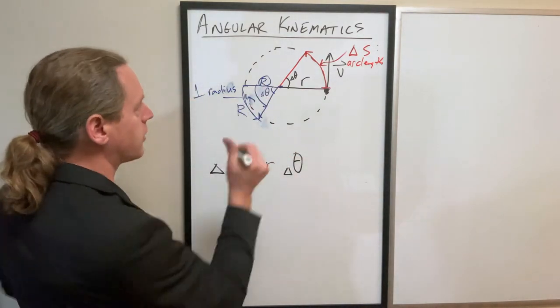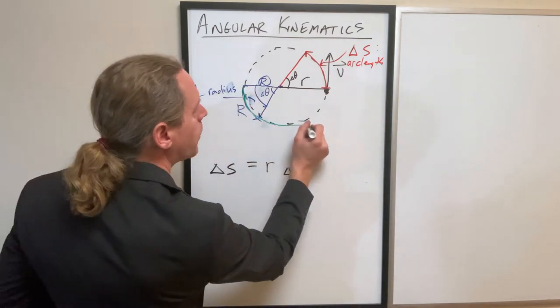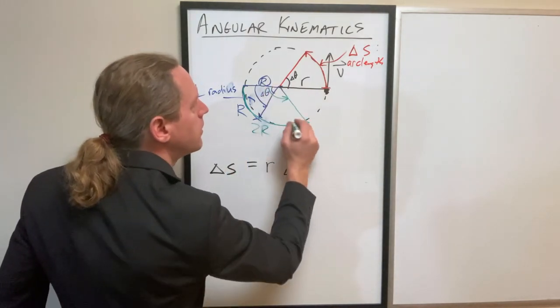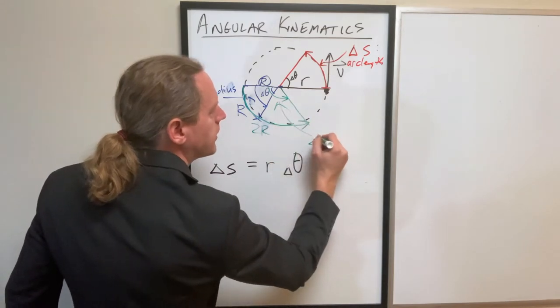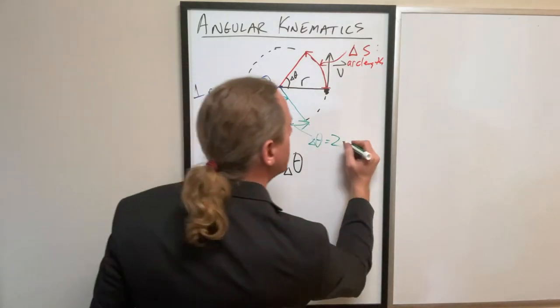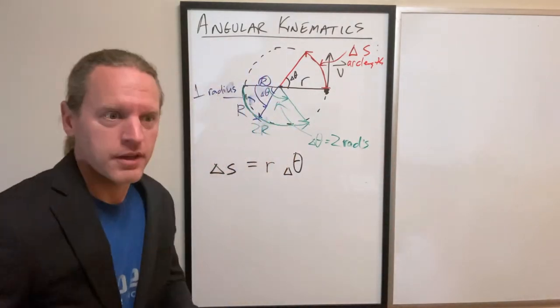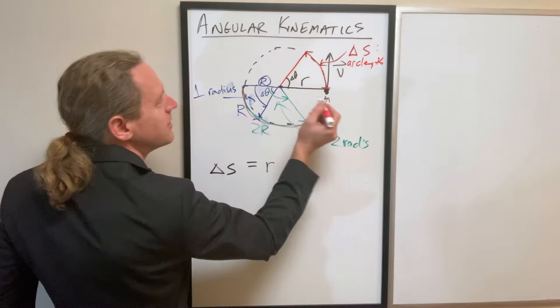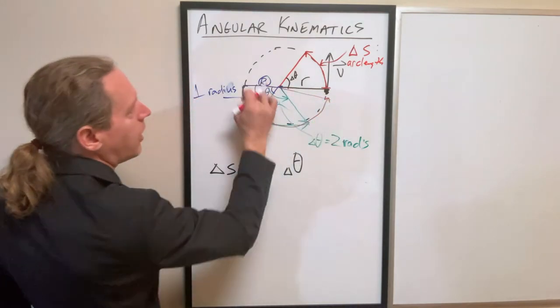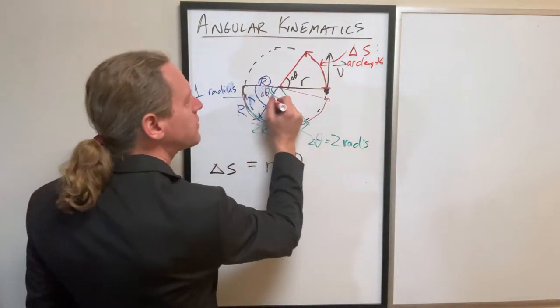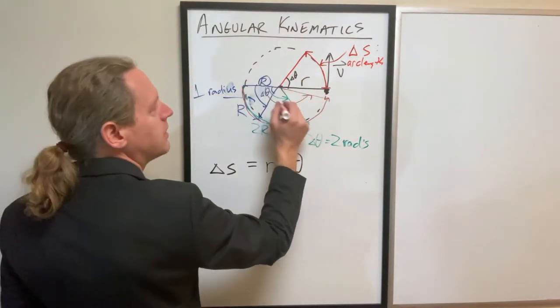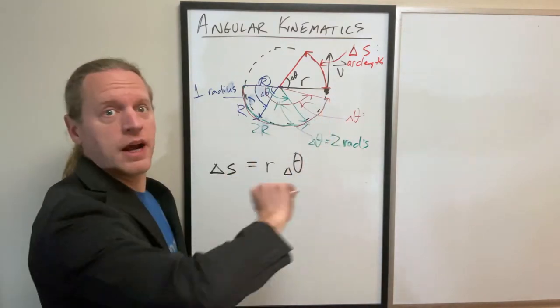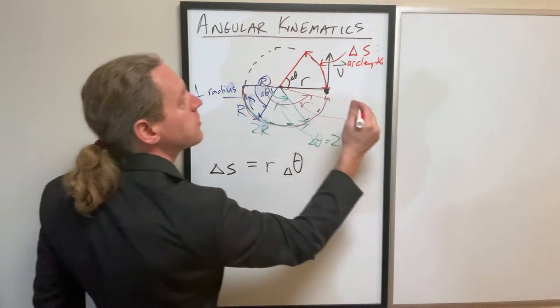Now if they walk a distance of 2R - two radiuses around the outside - delta theta will be two radians. Now let's say they walk around a distance equal to three radiuses. In that case, the total angle subtended, delta theta, is one radian, two radians, three radians.